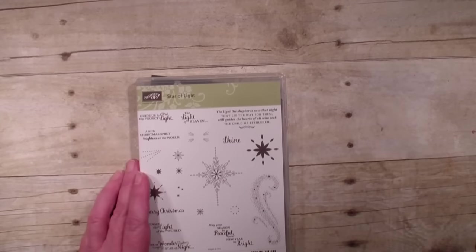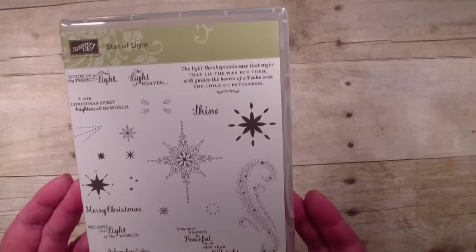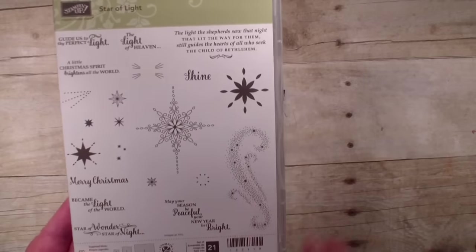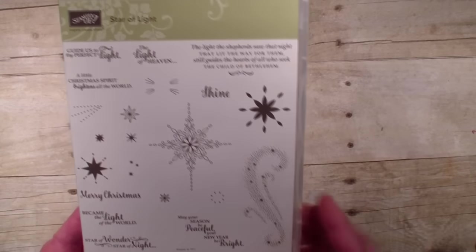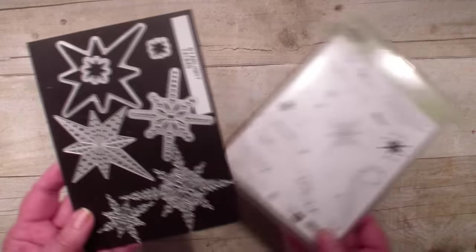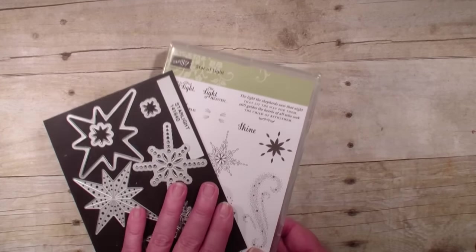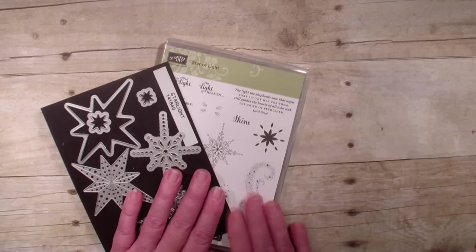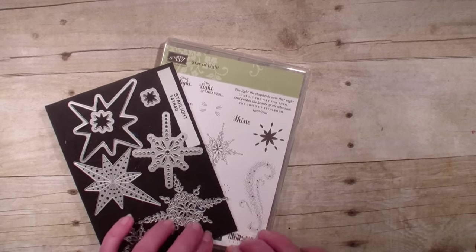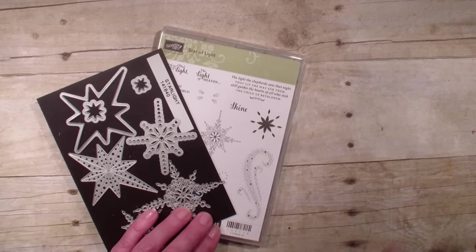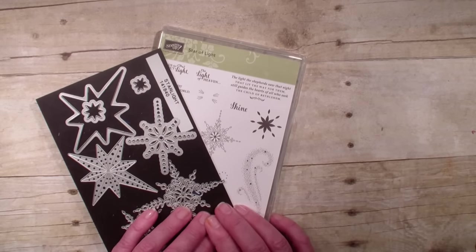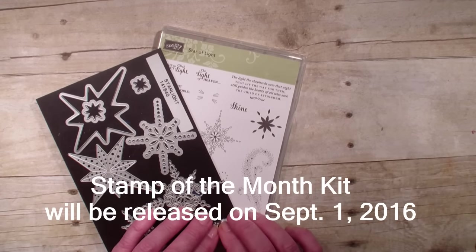Now I am going to be showcasing the Star of Light stamp set. This is a beautiful set. It features 21 different stamps and also has framelits with seven matching ones. This bundle will be my first stamp of the month out of the holiday catalog. Head over to stampingwithlinda.com on Thursday and get all of those details.